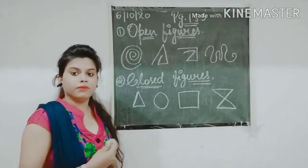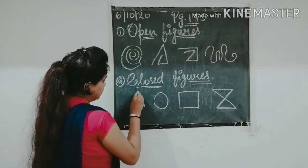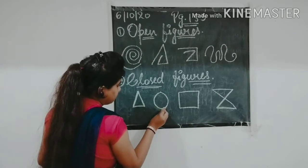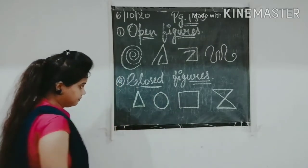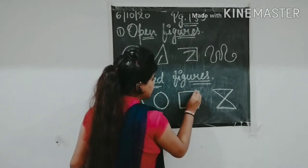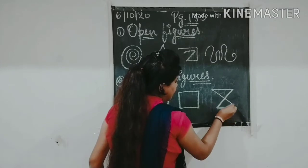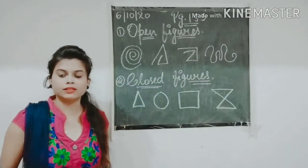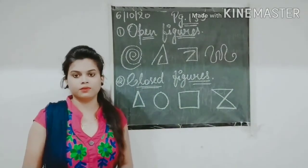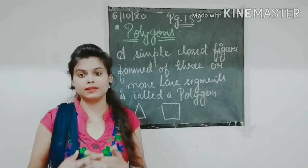Closed figures, on the other hand, begin and end at the same point. For example, this figure begins here and ends at the same point. These types of figures, which begin and end at the same point, are called closed figures.